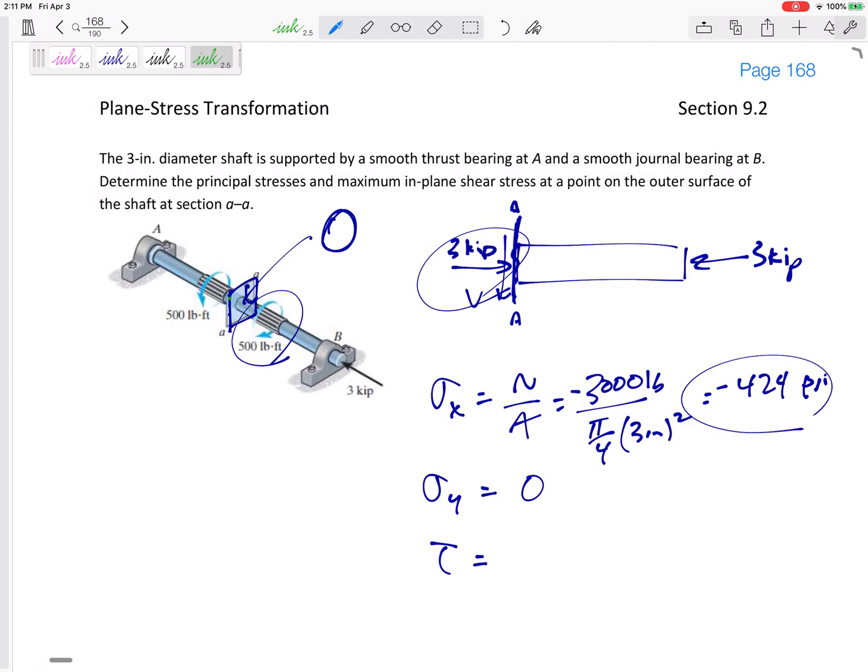This torsion, let's look at that cut. This torsion would cause some shear stress depending on, are we cutting it, are we looking at this half or this half? Are we looking down the barrel or against the barrel? But it would cause, remember, this type of shear stress like this.